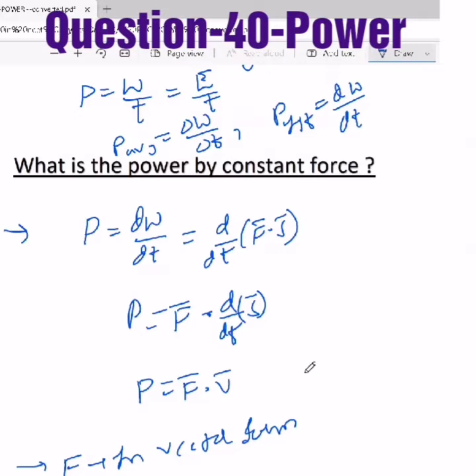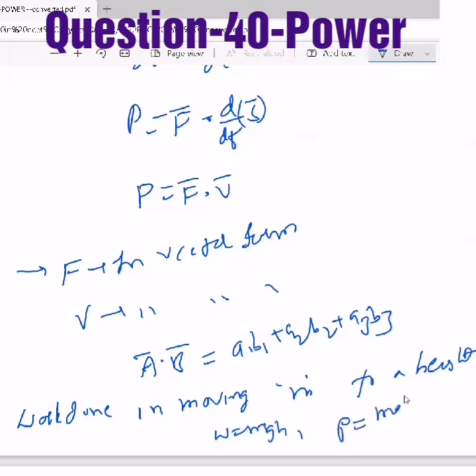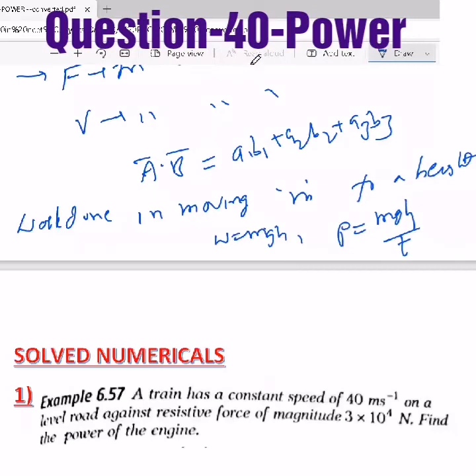For example, if you take your body to a certain height, then work done in moving mass m to height h is mgh, then power will become mgh/t. This is the way you need to understand the questions. So let's solve a few examples based on these simple things.